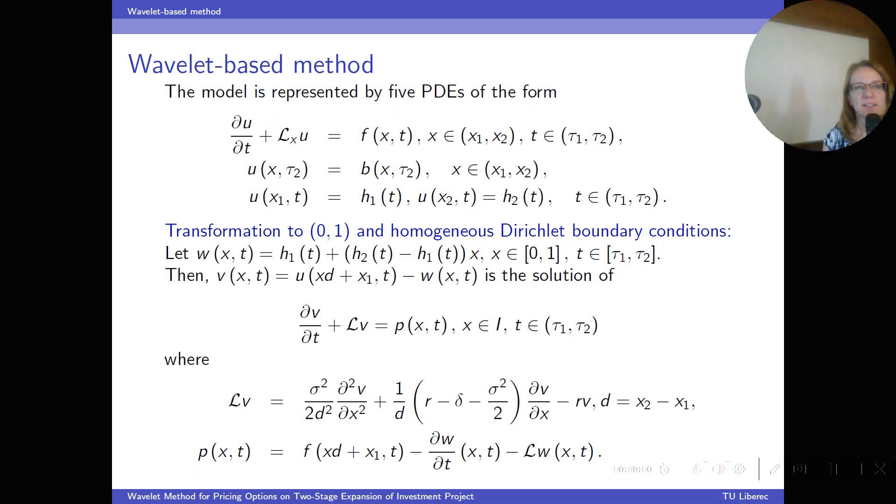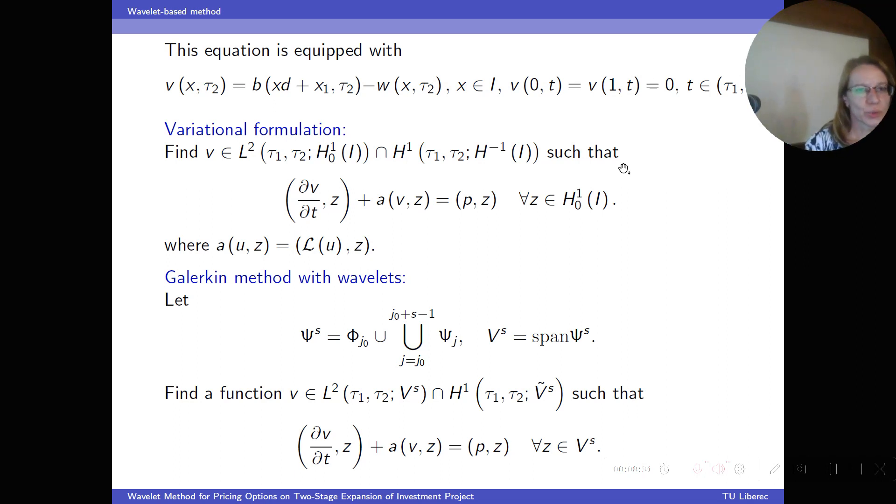As previously stated, the model is described by five equations. Fortunately, all of these equations are of the same type, and therefore we can use the same method to solve these equations. I briefly describe the method. First, we transform the equation to interval [0,1] and homogeneous Dirichlet boundary conditions by the standard approach. Then the variational formulation is derived, and the Galerkin method is used with s-levels of wavelets for spatial discretization.